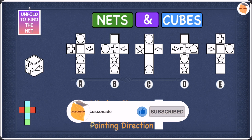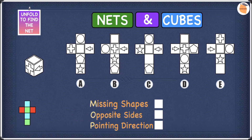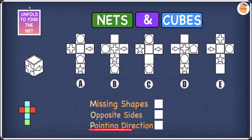Let's have a look at this example, and for this example we're going to use MOP to help us. M stands for missing shapes, O stands for opposite sides, and P stands for pointing directions. Let's start with missing shapes first.